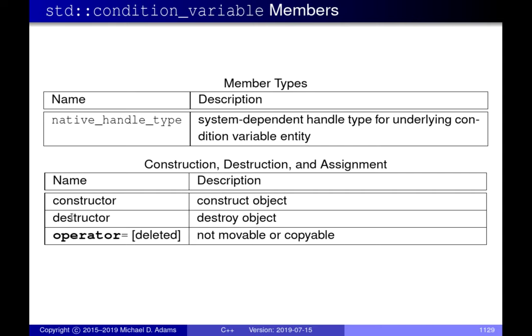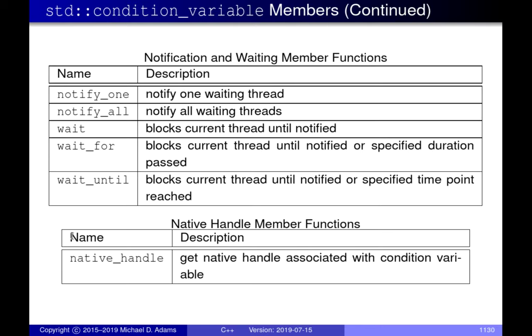Of course there are constructors and destructors. The type is not movable or copyable, so the assignment operator is deleted and there are no move or copy constructors. The more interesting functions are notify_one and notify_all, used for signaling operations. The only difference is notify_one signals only one waiting thread, whereas notify_all wakes up all currently blocked threads. For wait, there are three variants: the basic wait blocks forever; wait_for and wait_until have timeouts and will return indicating the timeout expired if nobody notifies.